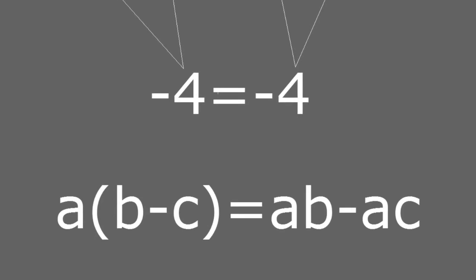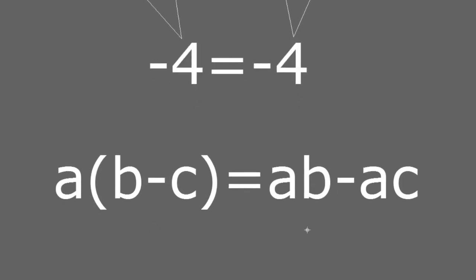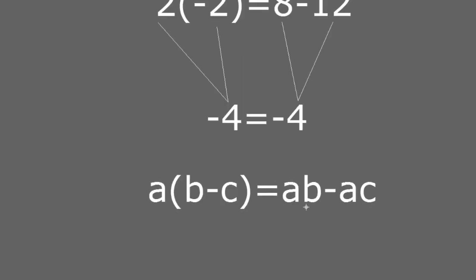So if we have subtraction, this is the form that we have to use: a multiplied by b minus c will be equal to a times b minus a times c.